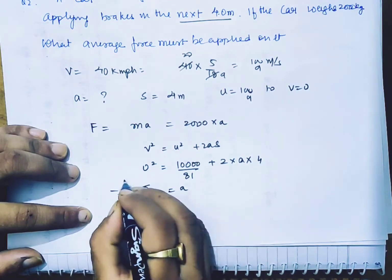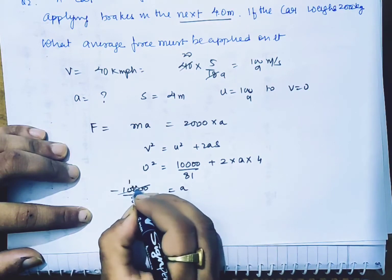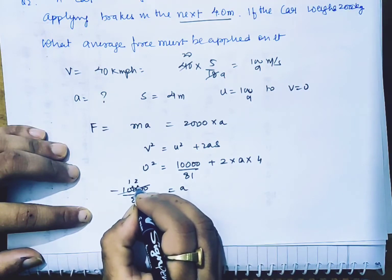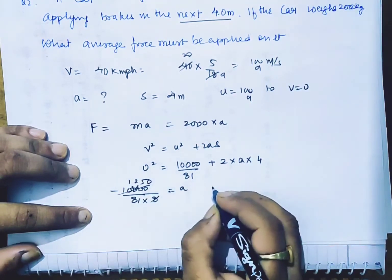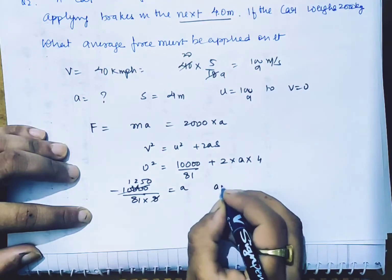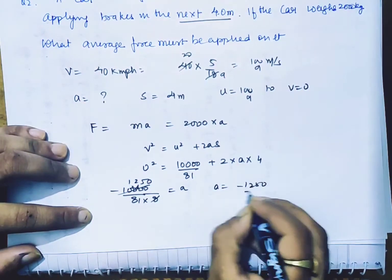So we have to find a here. So we will take minus 10000 divided by 81 divided by 8. That gives us 1250. So 1250 minus, or negative 1250 upon 81.